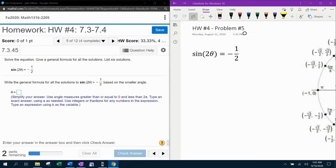Alright, here we go. Question number five from our 1316 homework number four in MyLabMath. They want us to solve the trigonometric equation. It says give the general formula for all the solutions, and then we need to list six solutions.